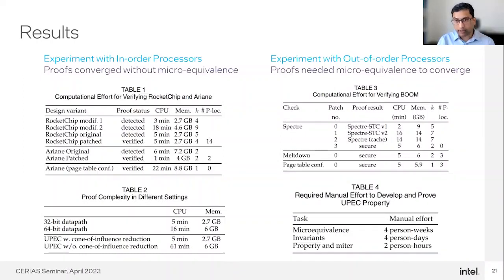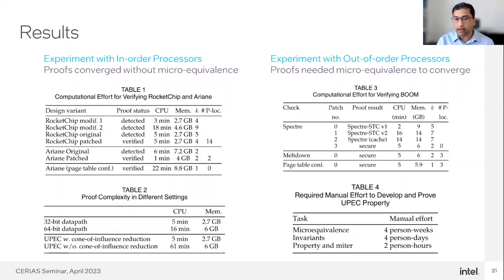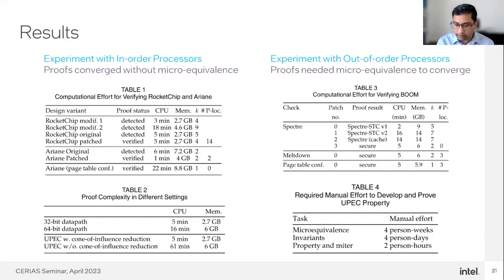In our experimental suite, we have both in-order and out-of-order processors. For in-order processors, this proof technique works as-is. For out-of-order processors, which are more complex, we need some additional invariants — called micro-equivalents — to speed up the verification process. Please refer to the paper for those details.